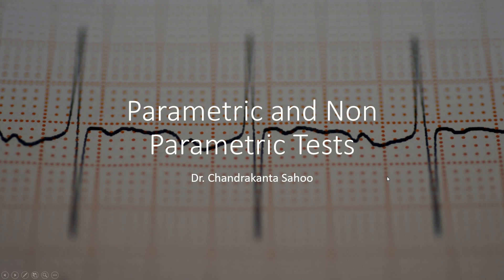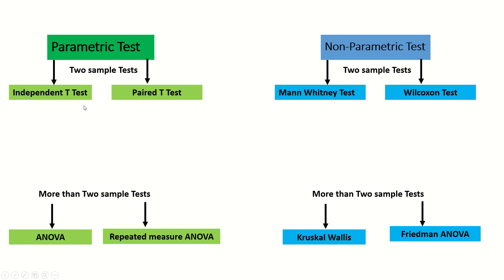Welcome back. In this lesson we are going to understand the usage of parametric and non-parametric tests. A parametric test is one in which parameters are assumed and the population distribution is always known. To calculate central tendency, a mean value is used. These tests are common and make performing research straightforward without consuming much time. In a non-parametric test, no assumptions are made and it measures using the median.